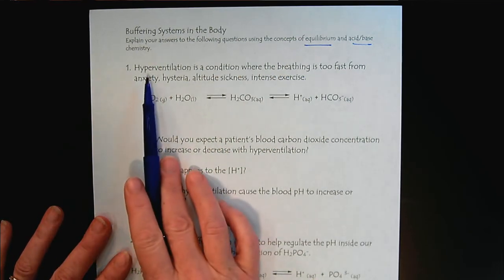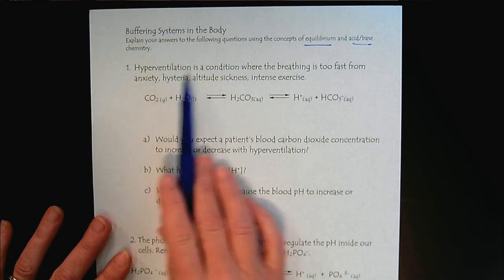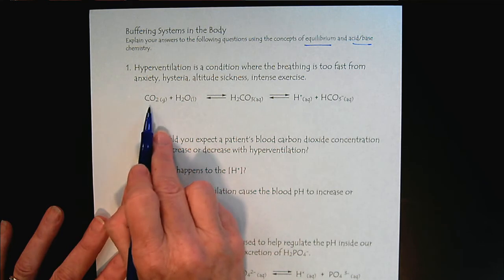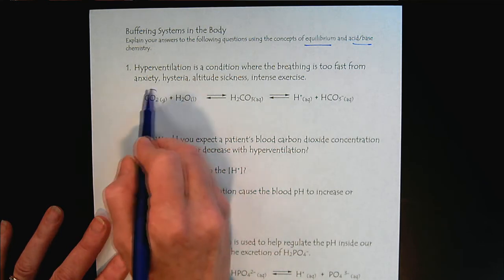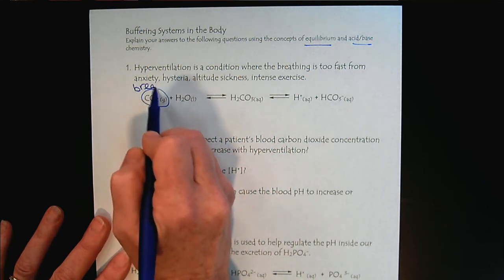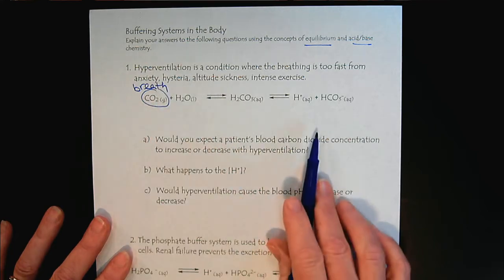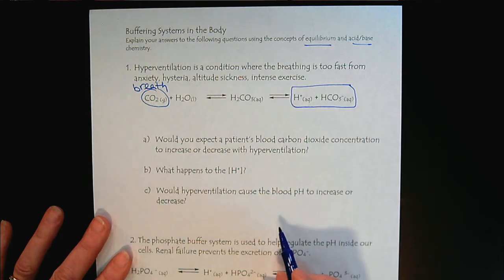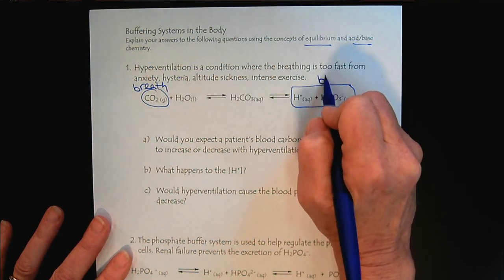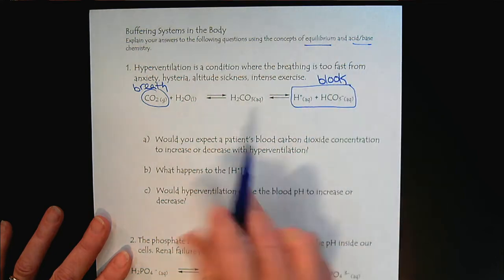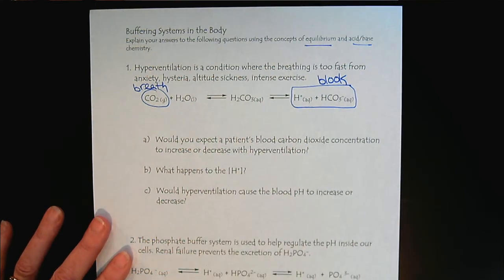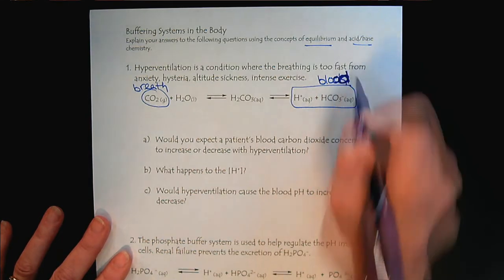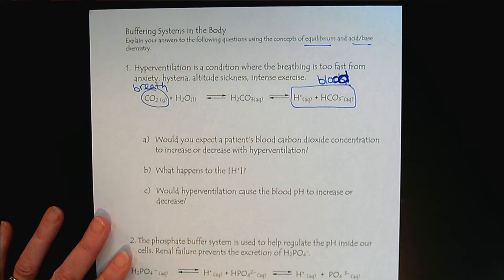Let's go back to our example of hyperventilation, where breathing is too fast. The CO2 is controlled through our breath, and the hydrogen ions and the bicarbonate are found in our blood. So the bicarbonate system is primarily responsible for helping to maintain the pH of our blood.